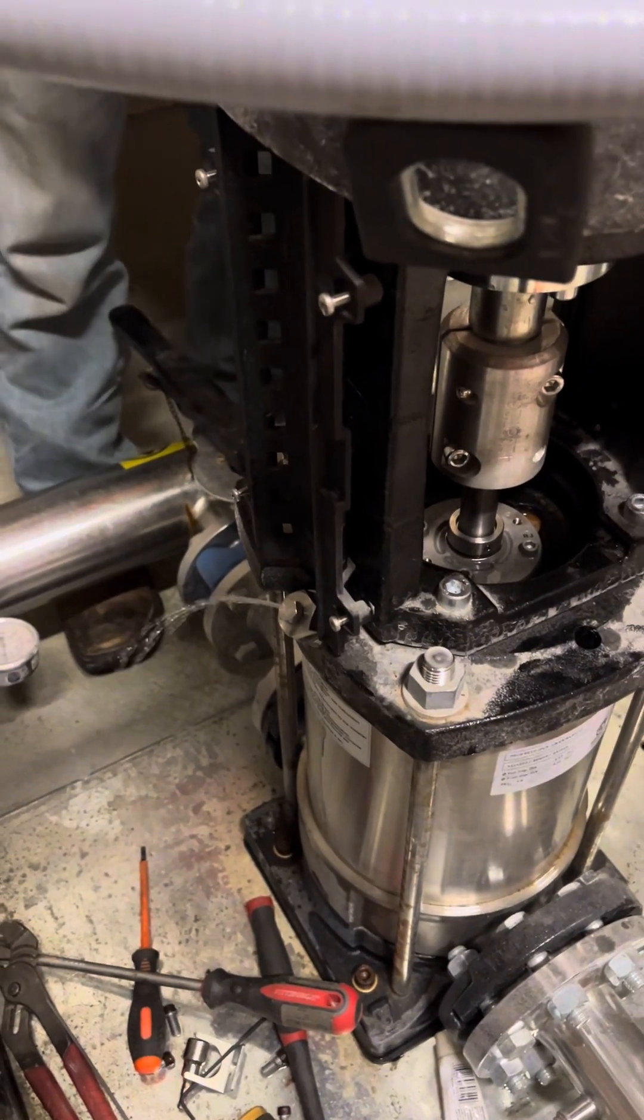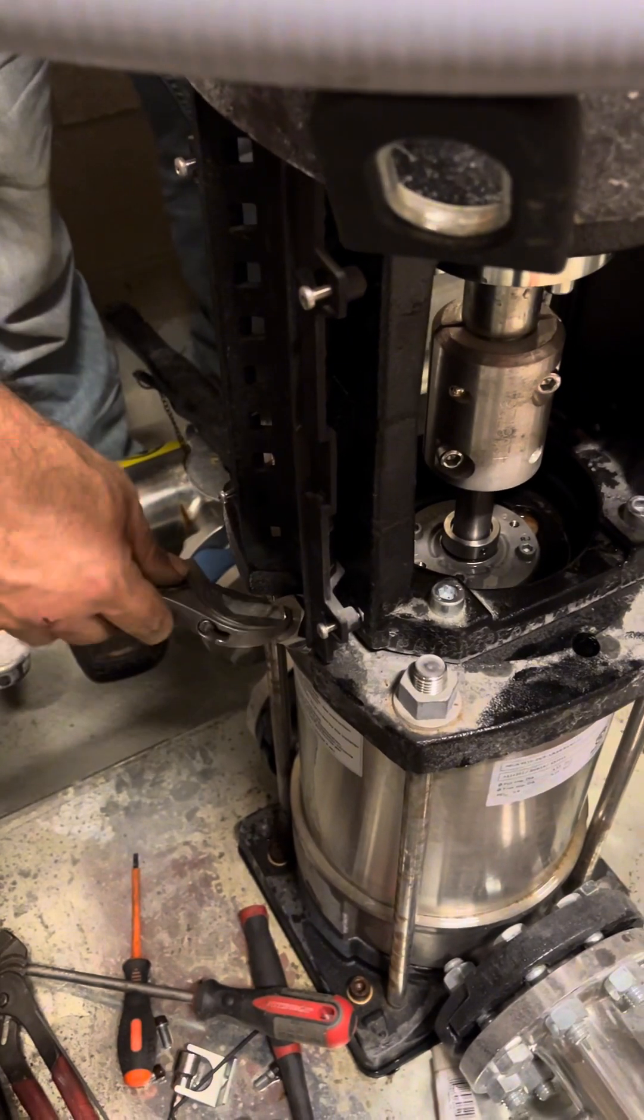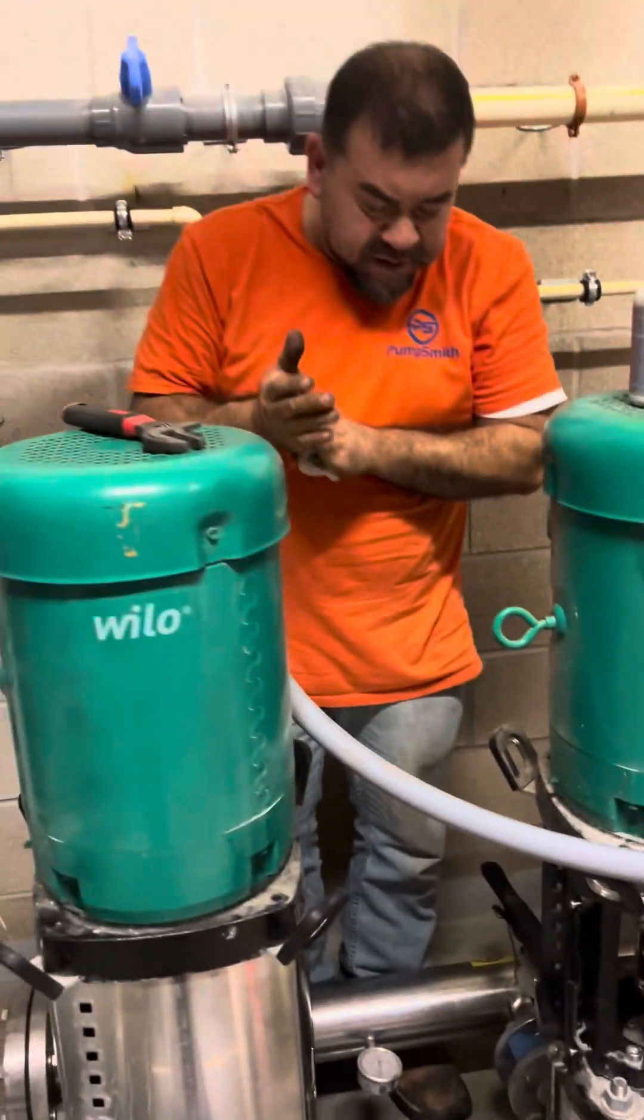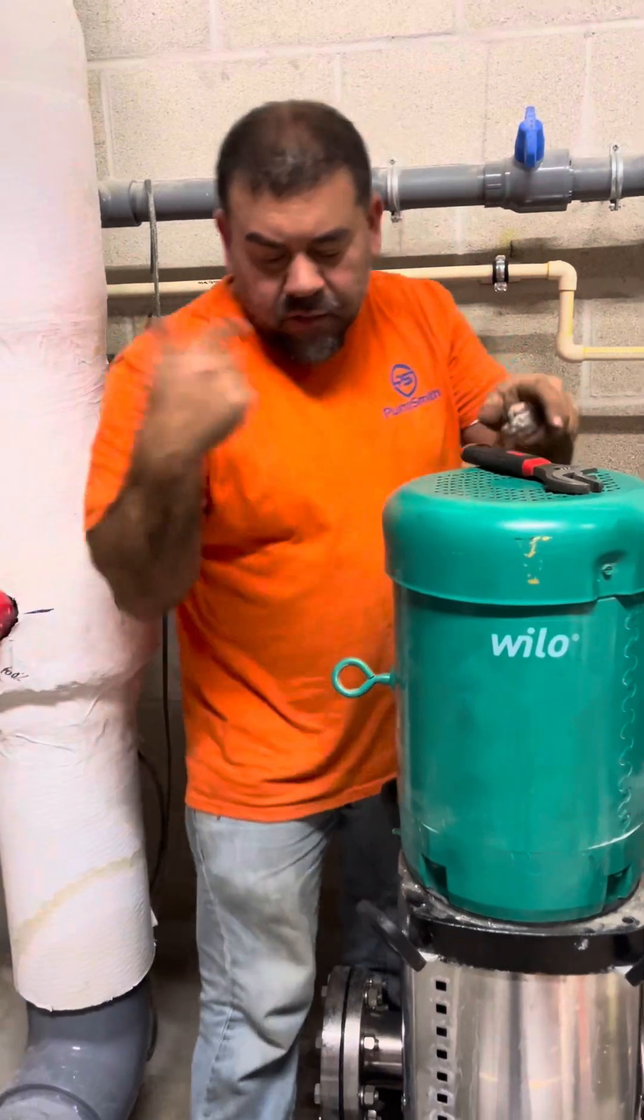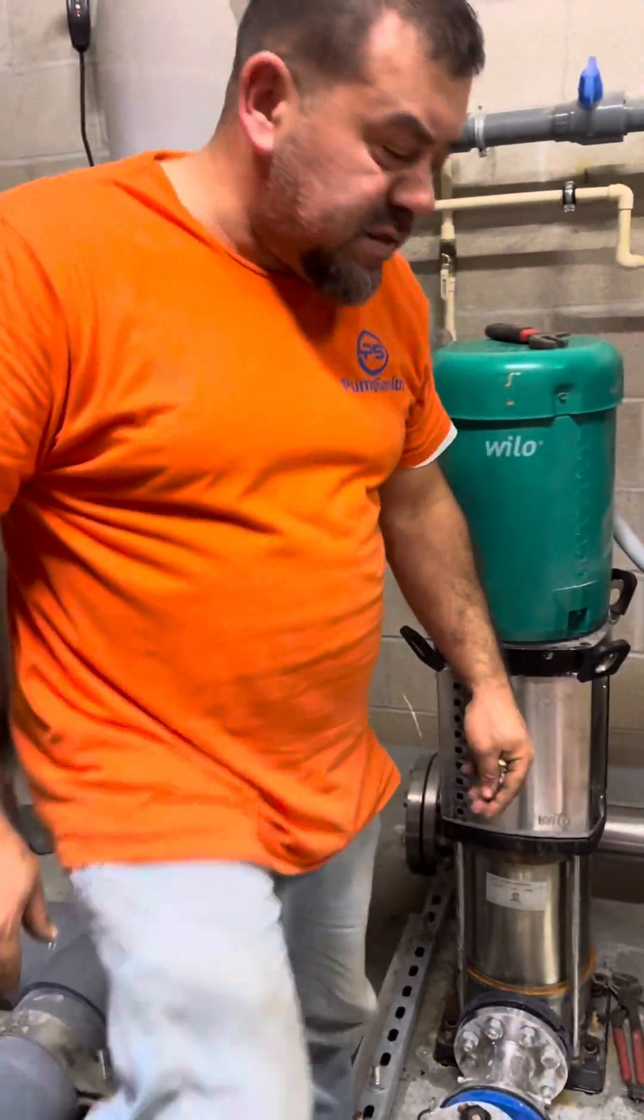Sometimes when you put a new seal in there, it will still leak a little bit until you start running the pump, because those two surrounding surfaces are touching each other but they're not quite even. Once you start to do that rotation, they'll settle up and be flat, pushing up against each other.